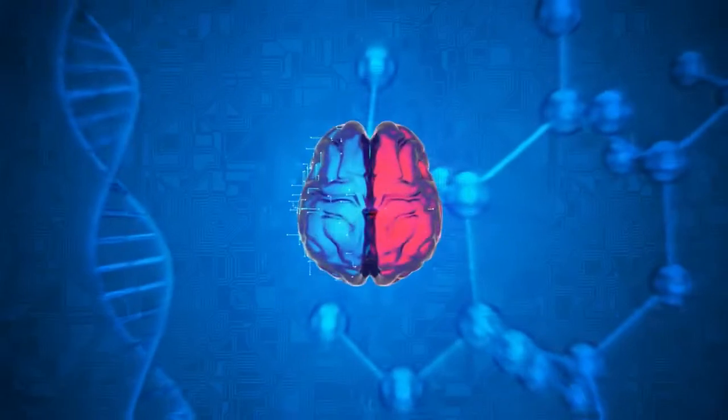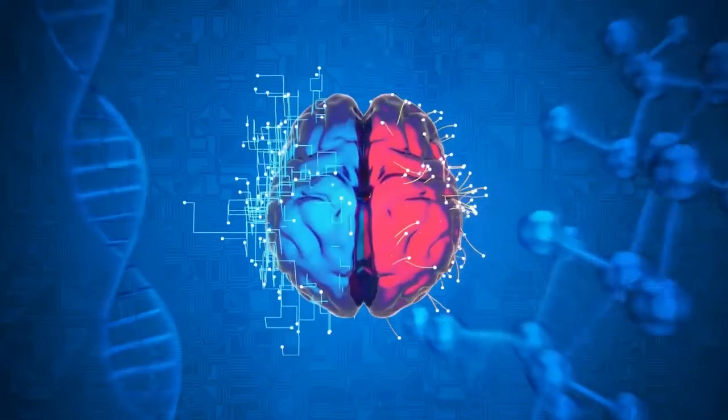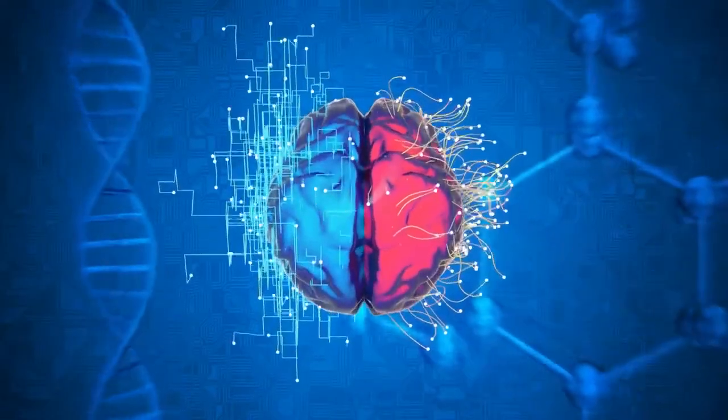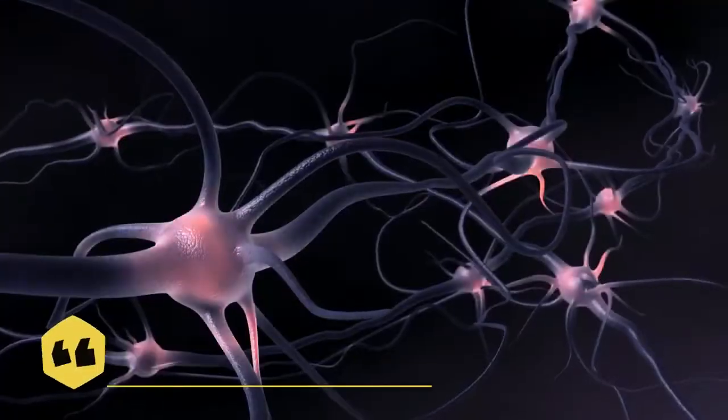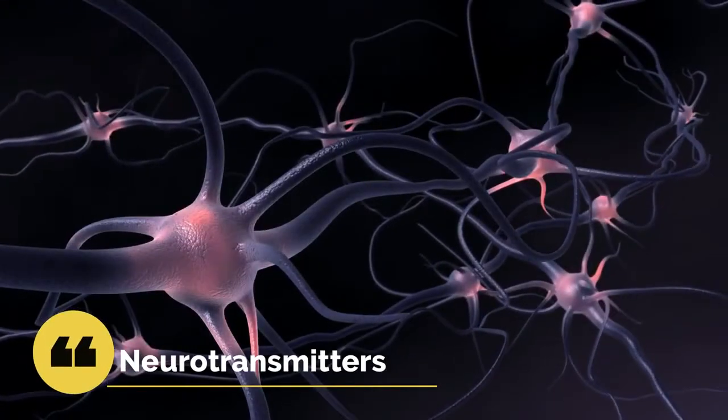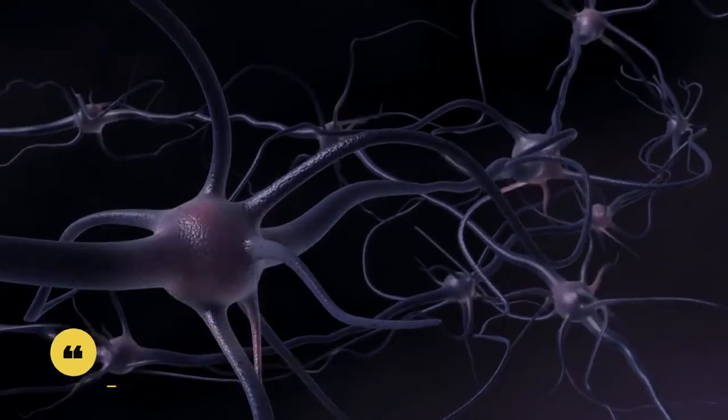Neuralink may not be able to teach you martial arts, but it can send and receive electrical signals through your brain to control the machine. For now, the company says it will be able to control basic devices like your smartphone and computers and maybe even write with your mind. To understand how Neuralink works, you need to understand that your brain uses neurons to send information to different parts of your body.